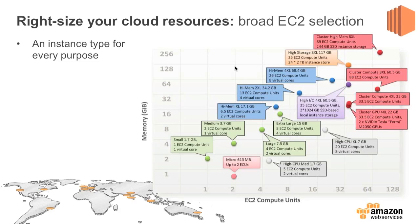So if you're looking at the slide, the green servers are the standard instance type — standard ratio of CPU to memory. Then we've got the blue ones, which are high memory types and so forth.